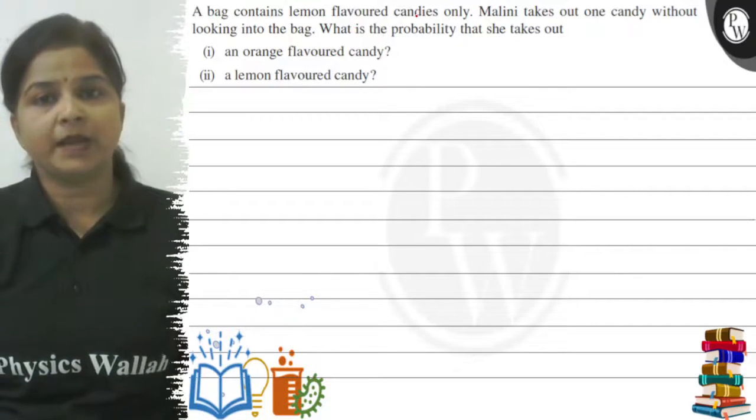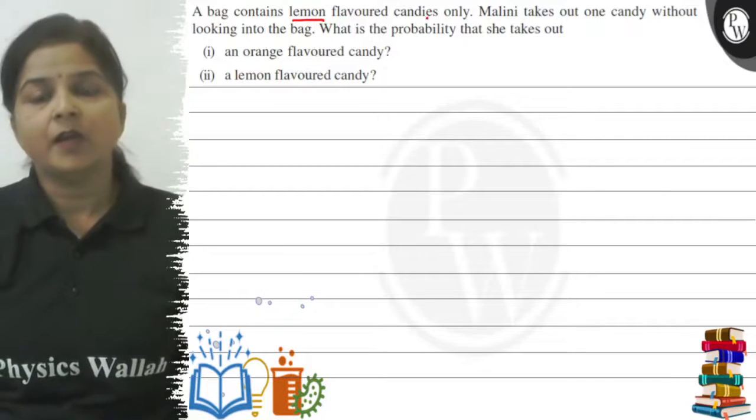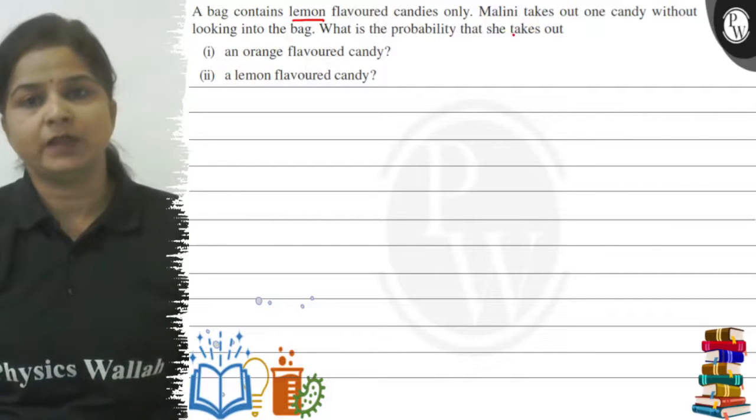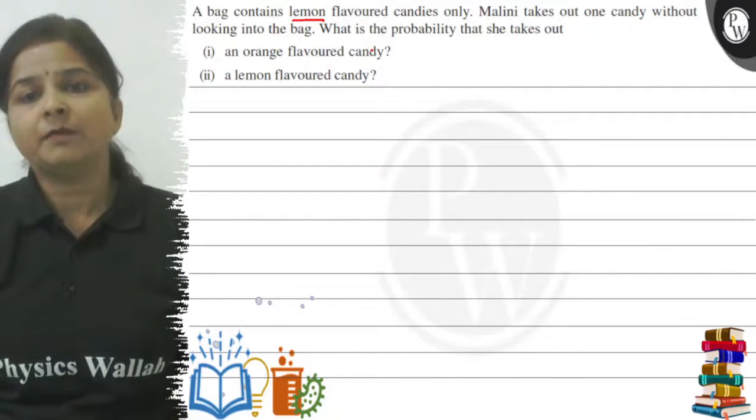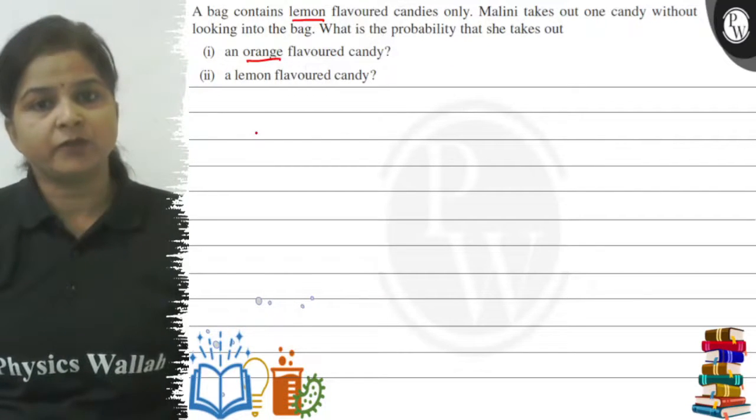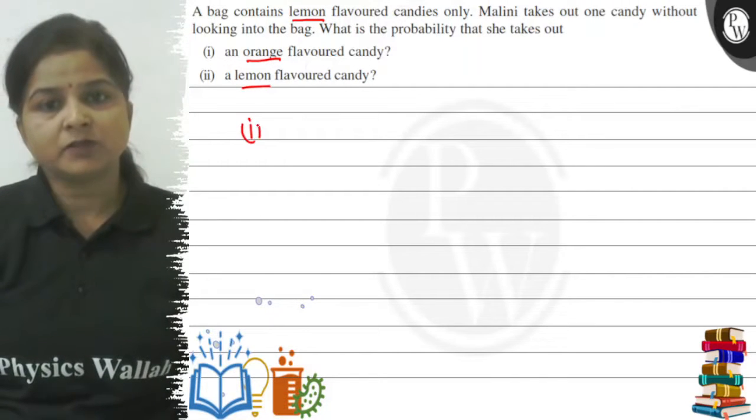So here we have a bag. There are only lemon flavored candies. Malini took out one candy from the bag without looking. Now we have to find the probabilities. In the first part it will be orange flavored candy and in the second part it will be lemon flavored.